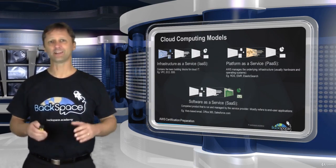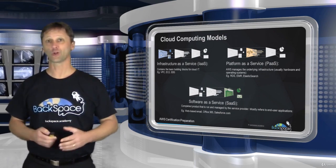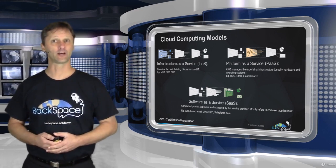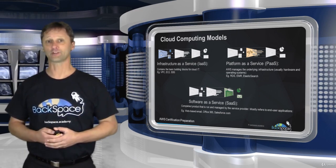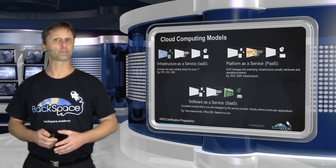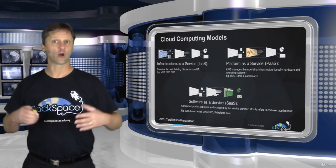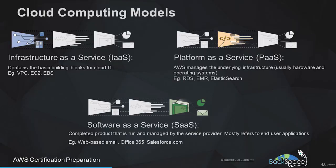Infrastructure as a Service contains the basic building blocks for cloud IT — the nuts and bolts. If we want to launch a Linux server and manage it ourselves, that's Infrastructure as a Service, using the Elastic Compute Cloud or EC2 service. Platform as a Service is where AWS takes more control over the underlying infrastructure — AWS manages the hardware and operating system. A good example is the Relational Database Service, where AWS provisions the OS and server, but you still handle the high-level administration of the database.